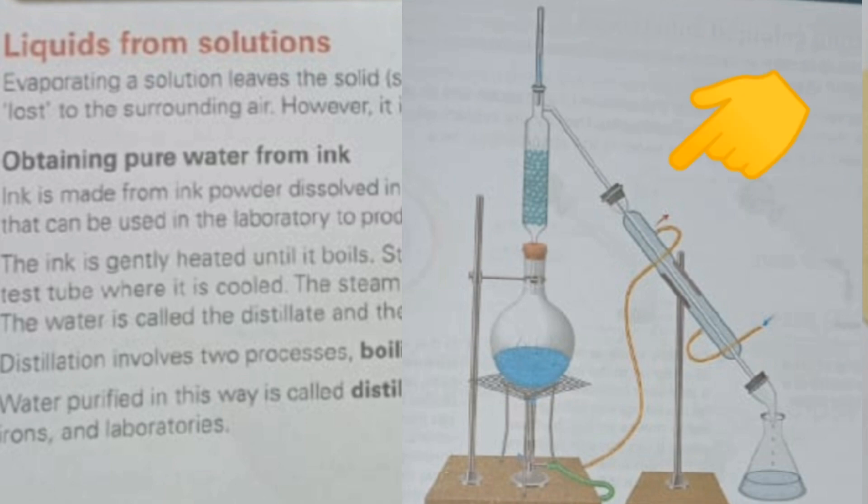When steam comes from the flask and reaches the test tube, the surrounding cooler air will cause it to condense. It will turn into water — without any ink, and without any steam remaining.